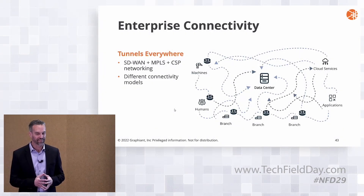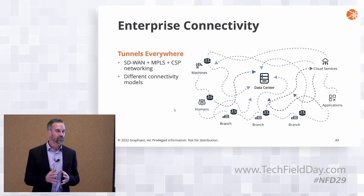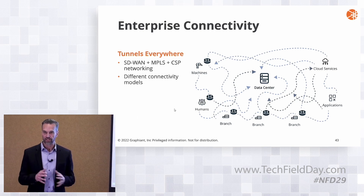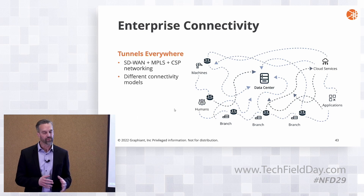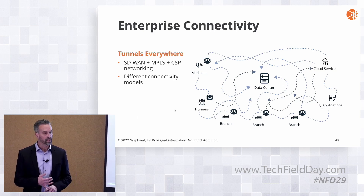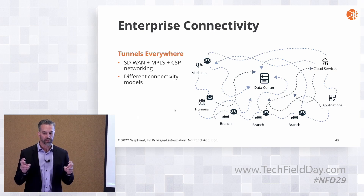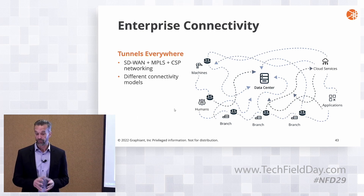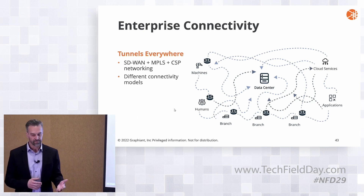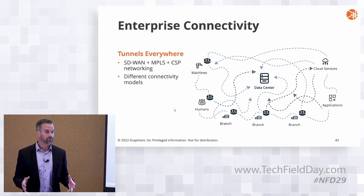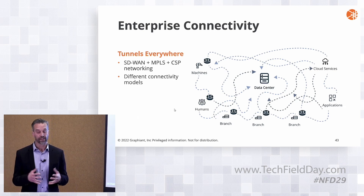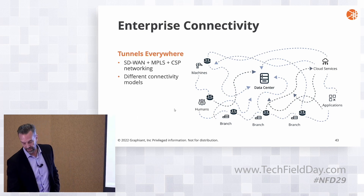If we look at use cases, we really look at a few different ones. The first one is the enterprise connectivity use case — moving away from this hodgepodge of tunnels and multiple different types of connectivity to connect our branch offices and data centers. With traditional SD-WAN, you're looking at tunnels everywhere, colo facilities, cloud service providers, carrier-neutral facilities — building out all of this infrastructure and tunneling to all of it. It just becomes an inefficient mess.